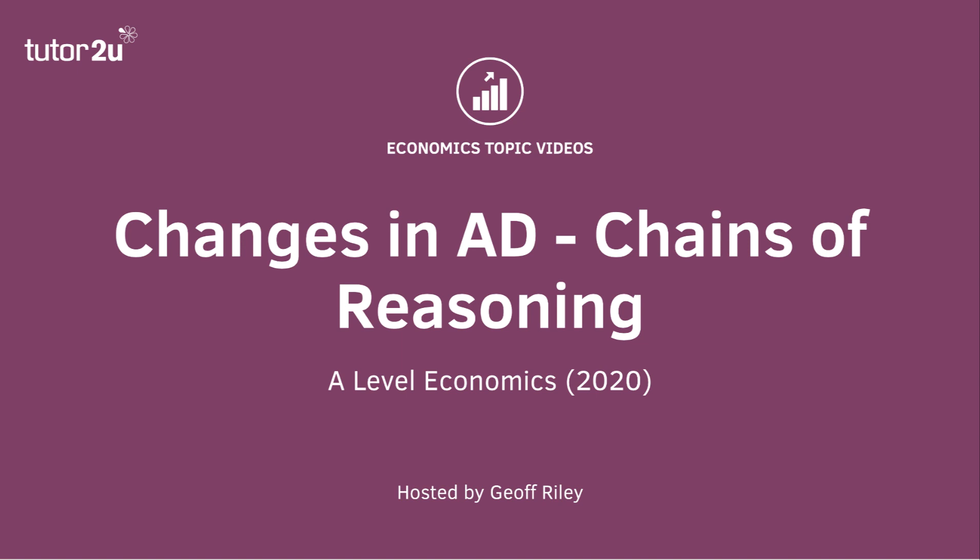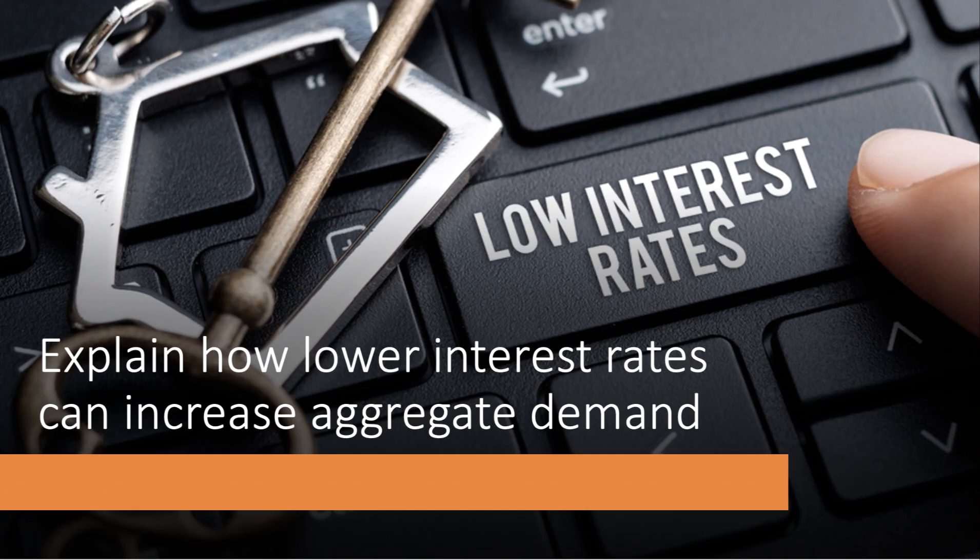In this video we're going to be taking a look at three short examples of building chains of reasoning to explain how a given factor might cause a shift in aggregate demand. Here's the first one: explain how lower interest rates can increase aggregate demand.